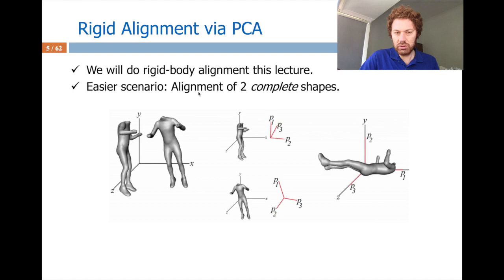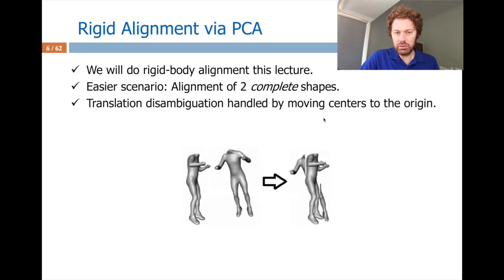I can do Principal Component Analysis to solve this problem for an easy scenario where the shapes are completely overlapping at different orientations, but they need to be complete. I will extract the principal components of this mesh — in other words, the principal directions of variations. This is the most significant variation direction: it is p1. I will align p1 with the x-axis, p2 with y, and p3 with z, and do it for both poses, consequently aligning them. But first I resolve the translation ambiguity by translating the centers to the origin.